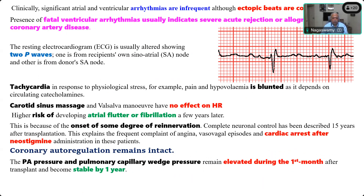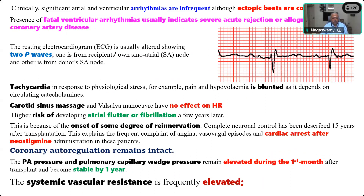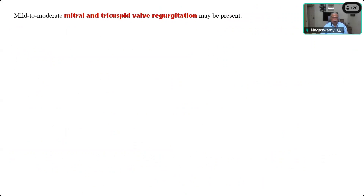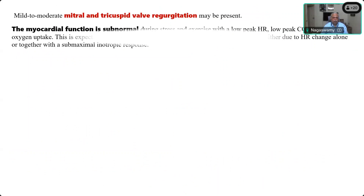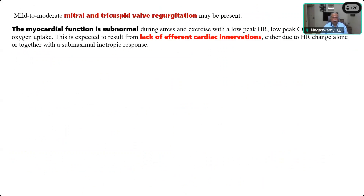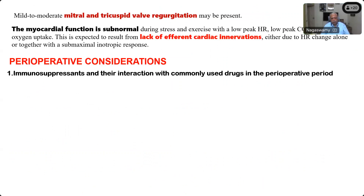Coronary autoregulation remains intact. PA pressure and pulmonary capillary pressure remain elevated during the first month after transplant but stabilize by one year. Systemic vascular resistance is frequently elevated. Mitral and tricuspid valve regurgitation may also be present. Myocardial function is subnormal during stress and exercise with a low peak heart rate, as heart rate cannot increase appropriately, and there is lack of afferent cardiac innervation, leading to a suboptimal inotropic response.